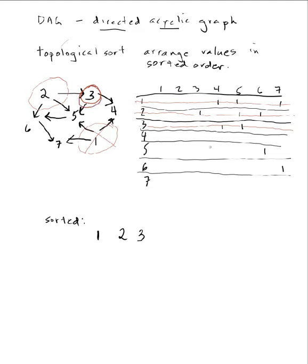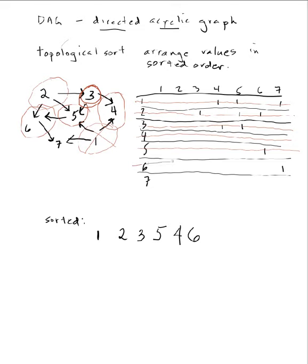Now for in-edges, I look and four and five are available. Let's take five — there's no in-edge on five because two and three have been deleted. So five is next. With five deleted, I can do six or four — let's do four. Four is done. Now I can do six, which gets rid of its entry, leaving only seven with no in-edges. So seven is last.